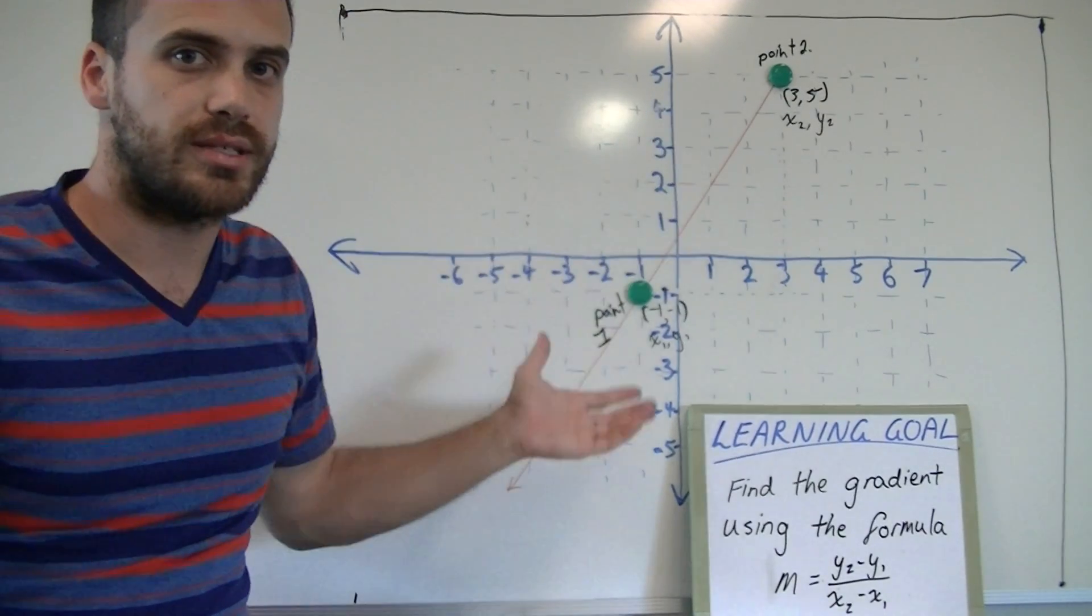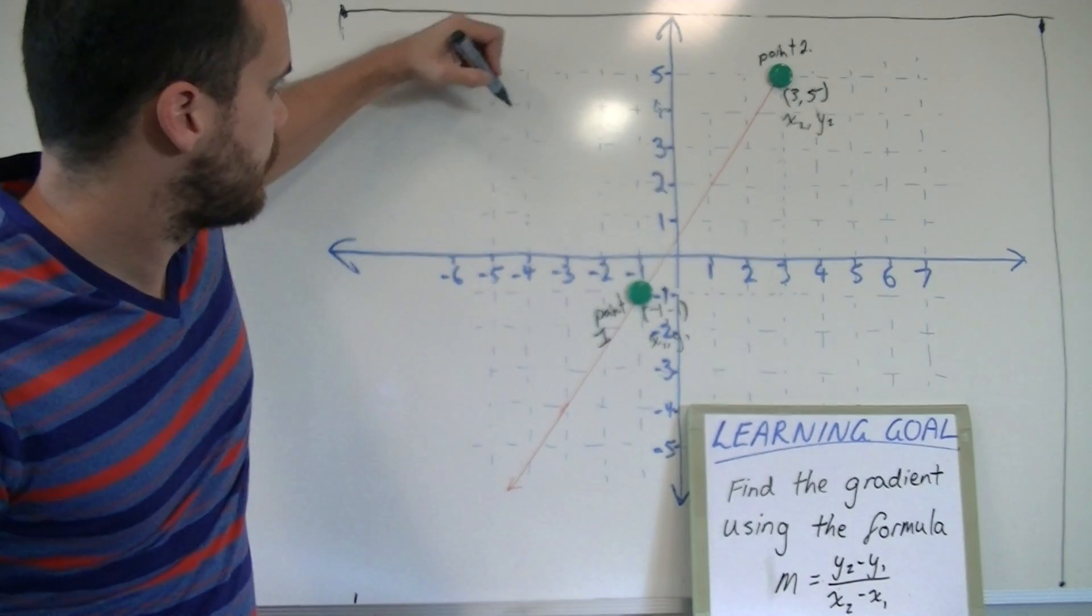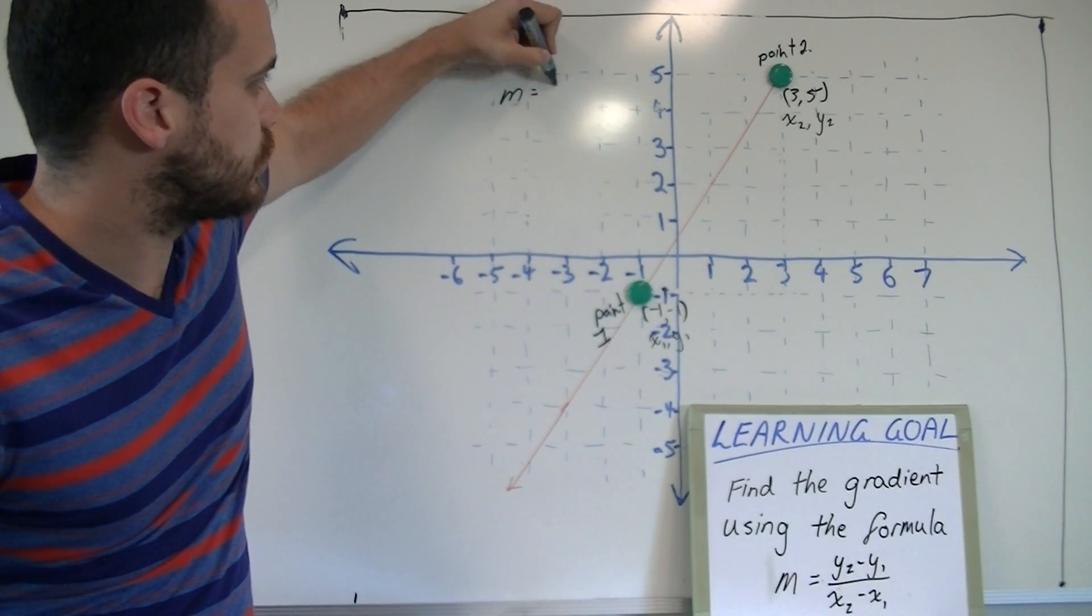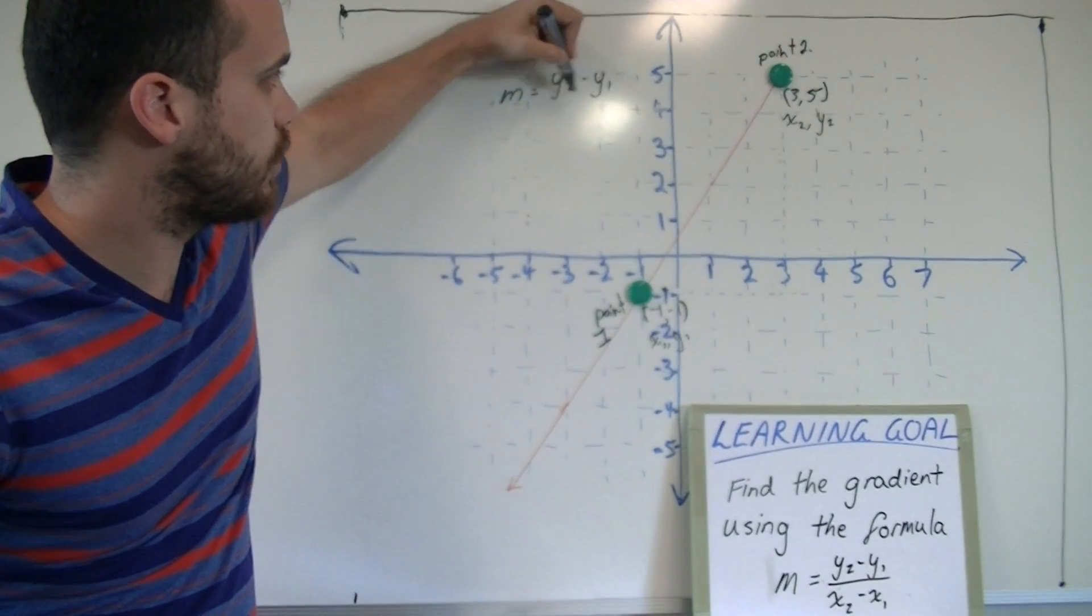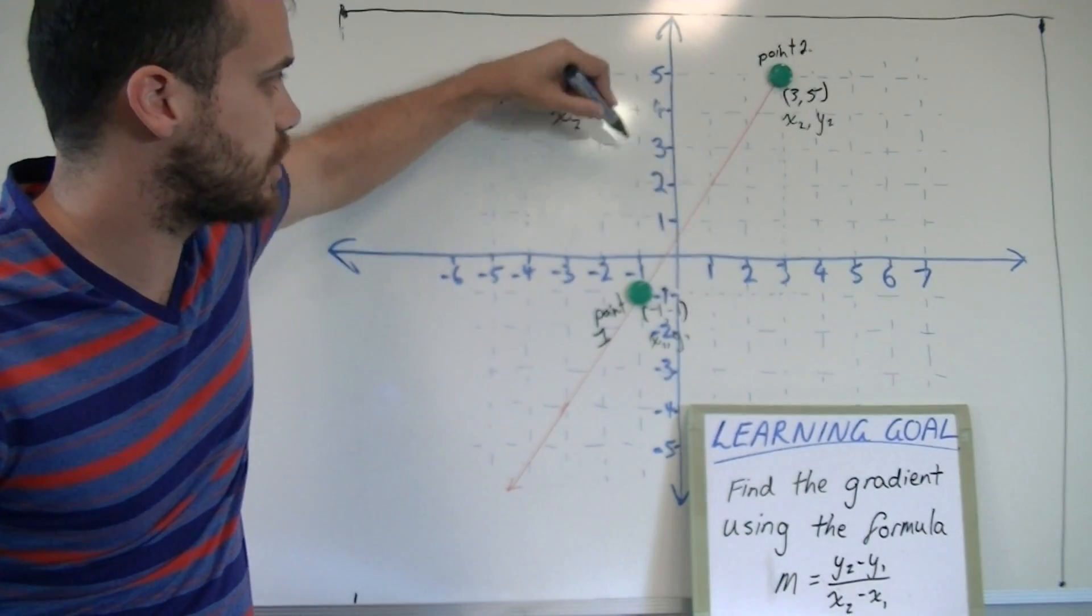Once you've set this up, you just need to put it into your formula: m equals y2 minus y1 over x2 minus x1.